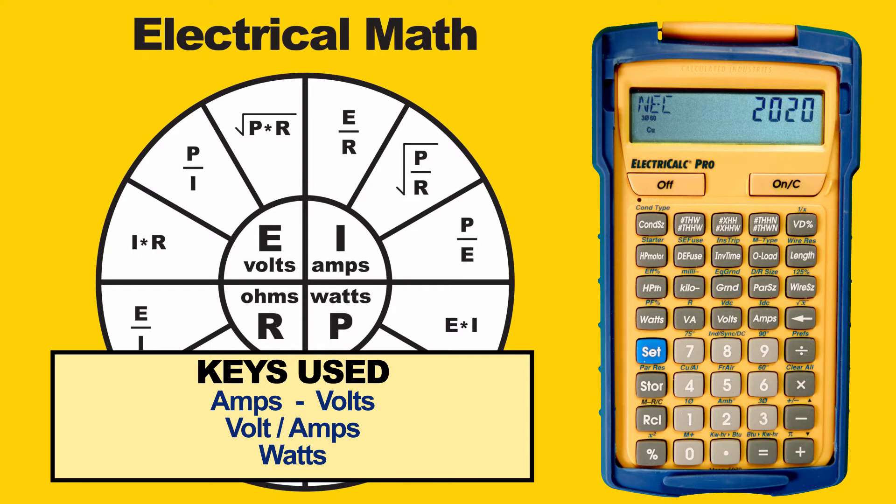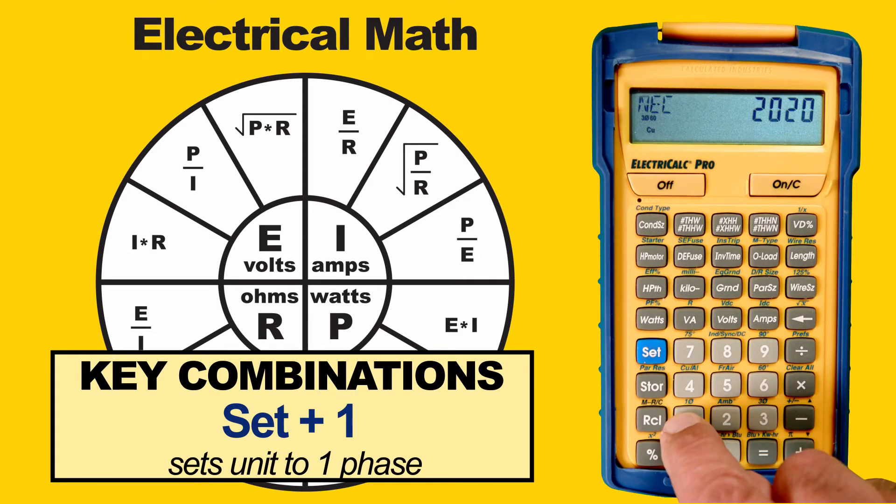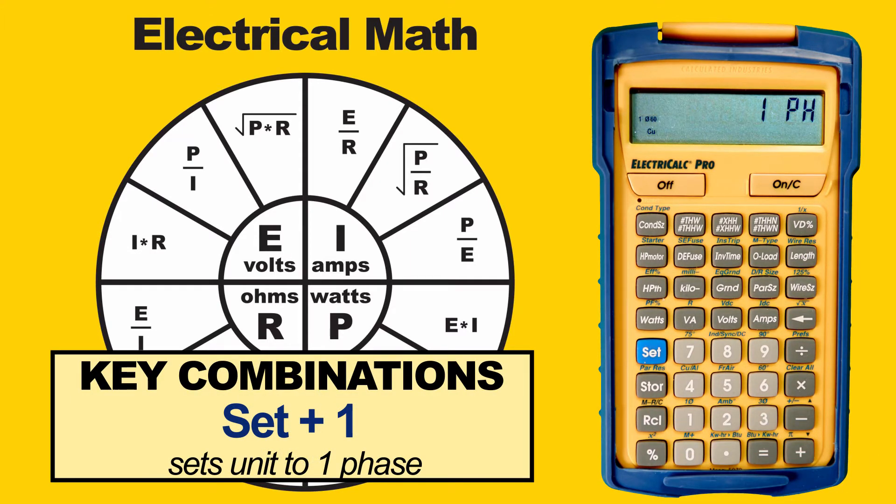Here's an example. Let's solve for voltage in a one-phase circuit. First, we press the Set button, then 1. That sets us to one phase as indicated on the display.